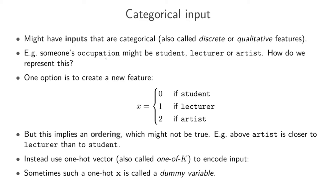Now we can't put into a linear regression model student, lecturer, or artist just directly. We need to encode this feature in some way. One option is maybe to create a new feature and we'll call it x. We encode it in this way: x takes on the value zero if the occupation is student, one if the occupation is lecturer, and two if the occupation is artist.